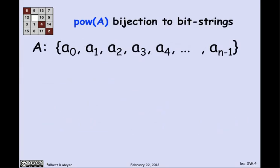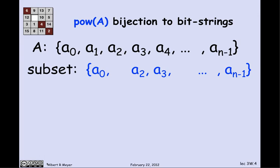Let's see what the counting argument in general would be. Suppose A has N elements, numbered A0 through A_(N-1), because computer scientists usually use zero-origin indexing. Suppose I have some arbitrary subset of A — say it has A0, no A1, has A2 and A3, doesn't have A4, and so on, ending with A_(N-1). I can take that subset and have it correspond to a bit string, where I put a 1 where the element is in the subset and a 0 where it is not.